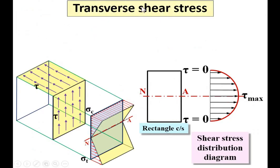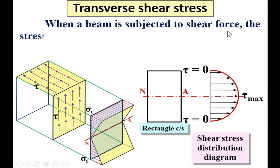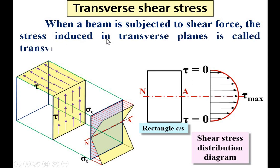Now, transverse shear stress — also a very important shear stress, though not listed among the main types. When a beam is subjected to shear force, the stress induced in the transverse plane is called transverse shear stress. Here you can see the beam and its cross-section. If it is subjected to shear force, the stress produced in the transverse plane is known as transverse shear stress. The intensity of transverse shear stress along the cross-section is parabolic.